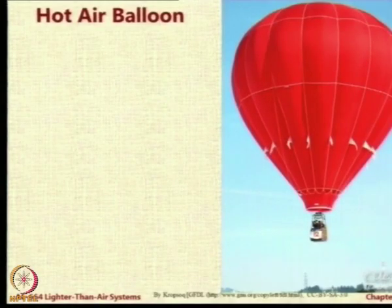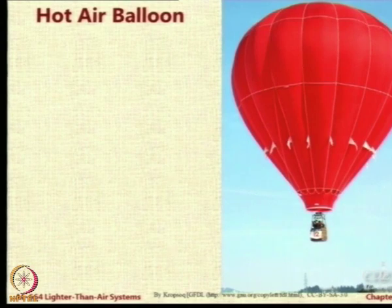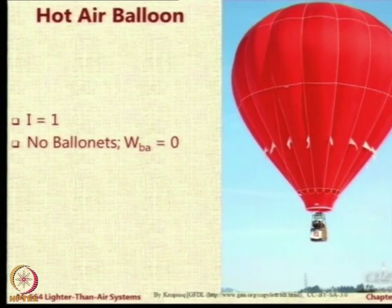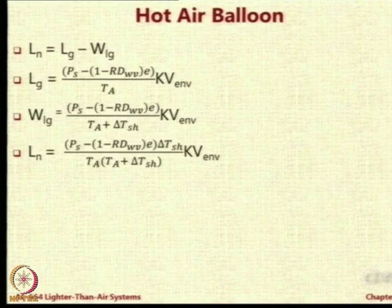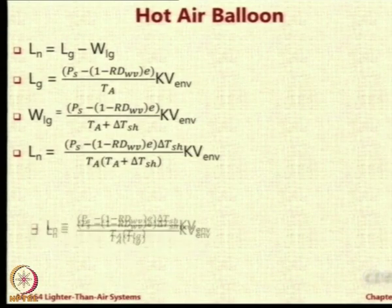Now let us look at the hot air balloon, which is what you are going to design. What happens in a hot air balloon? Do you have balloonets? No. What about the infraction fraction? It will be equal to 1 - that is the infraction fraction - and WBA will be equal to 0. Once you do that, the WBA term will be cancelled and wherever you use i, put it equal to 1. These are the expressions you will get.